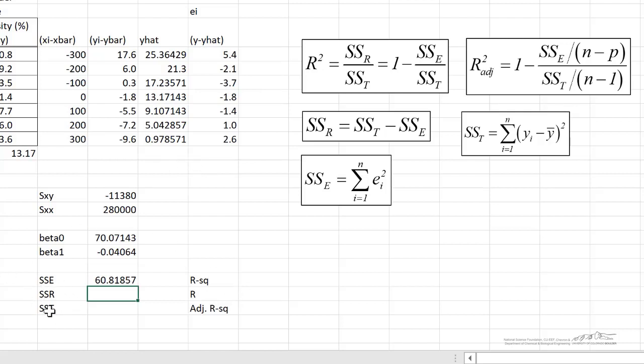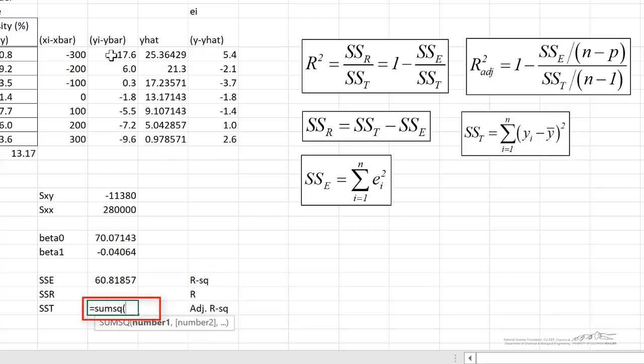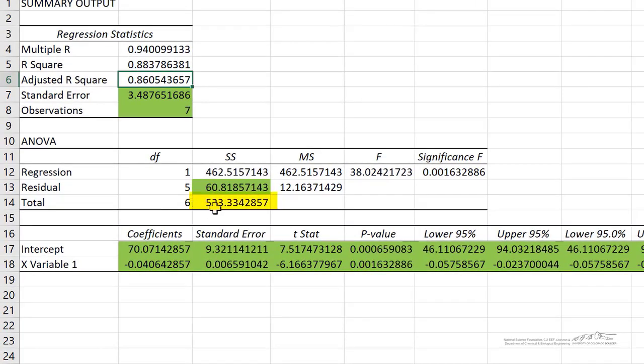In order to calculate sum squared of the regression, or the regression sum of squares, we first need to calculate SST, the total sum of squares. That's just how far each of our data points is from the average, and we square that. So that's SST. So that's just equal to the sum squared of Yi minus Y bar, 523.3. And that's exactly what we get here in the regression output. SST is 523. So now you know how to calculate that.